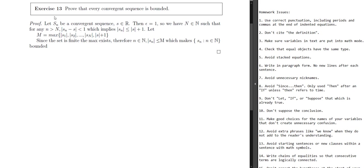Let S dot be a convergent sequence. When we're talking about sequences, the notation we're typically using is the name of the sequence and then a dot, probably you want to write something like this, where this S is lowercase. So S dot would equal the sequence S1, S2, etc.